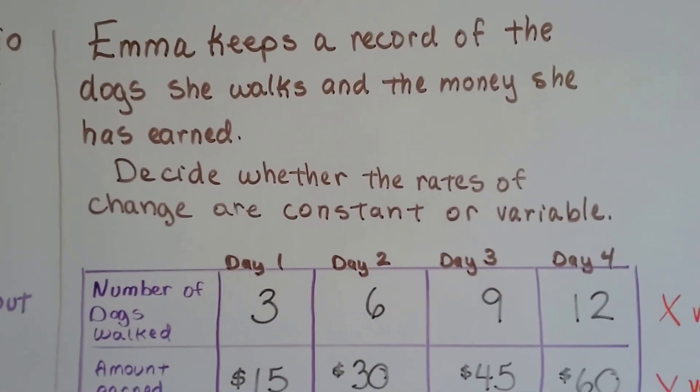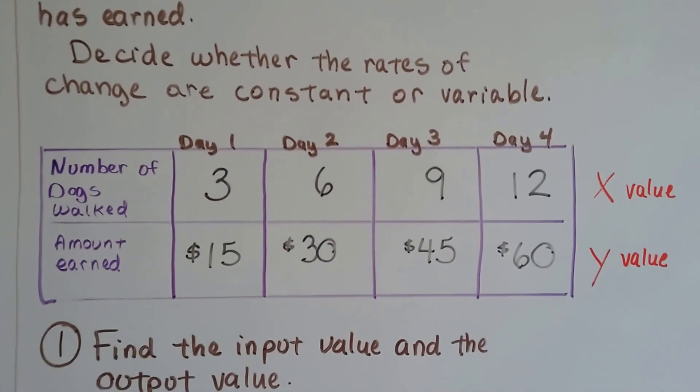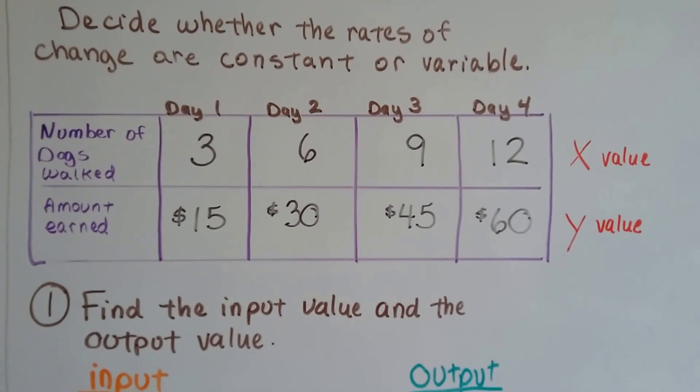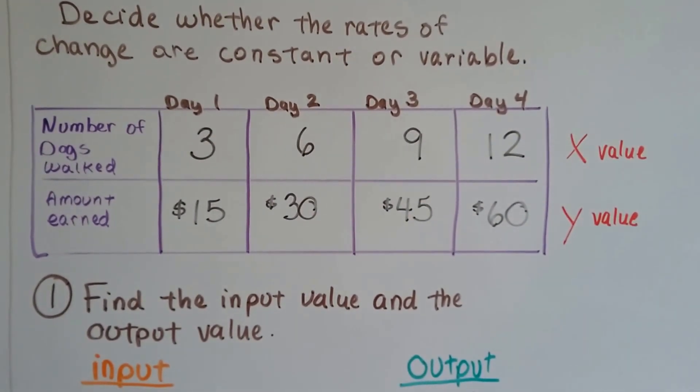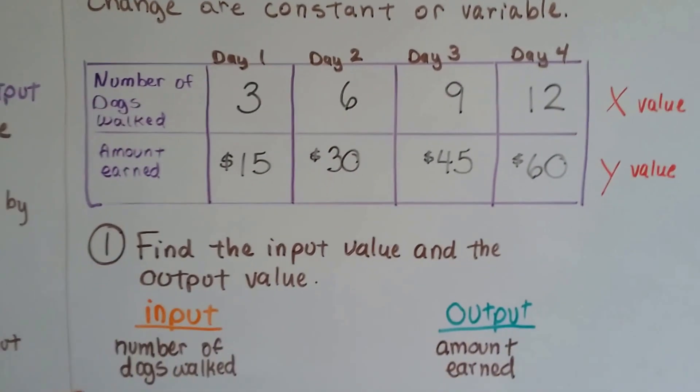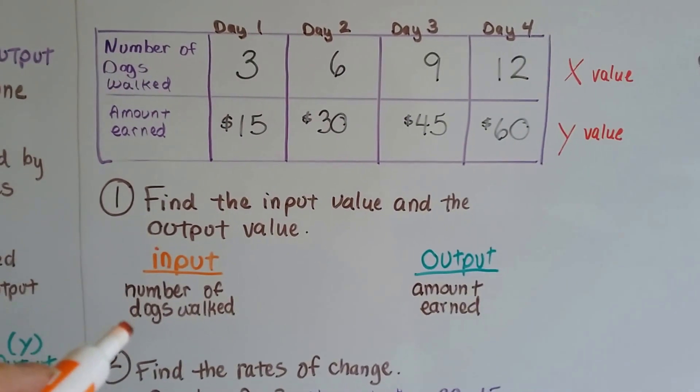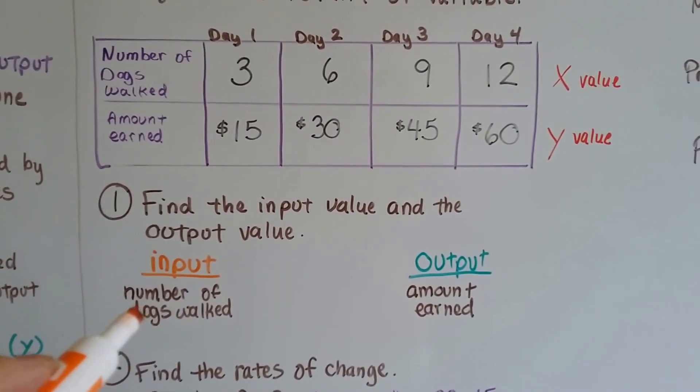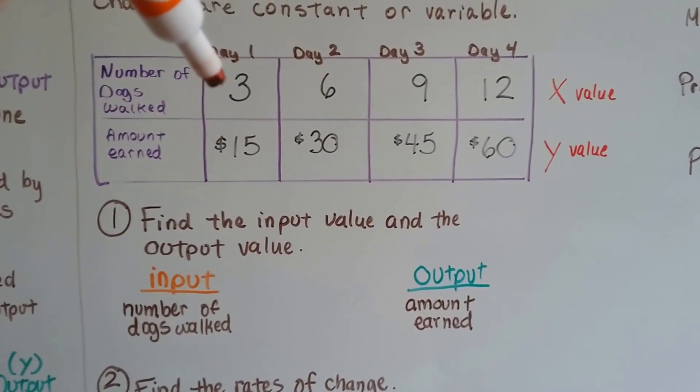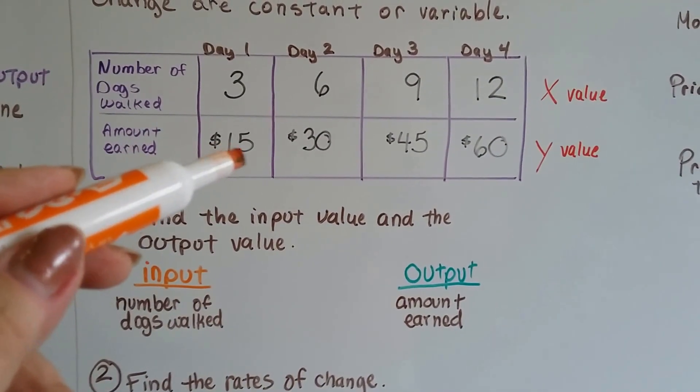Emma keeps a record of dogs she walks and the money she's earned. Decide whether the rates of change are constant or variable. So we've got the number of dogs walked, that's going to be our x value, and the amount she's earned, that's going to be the y value. We've got in the table the days that she's done this. So the first thing we do is find the input value and the output value. The input value is going to be the number of dogs walked. She walked 3 dogs day 1. The output value is the amount she earned. She earned $15.